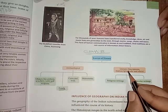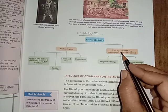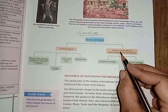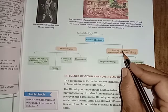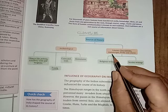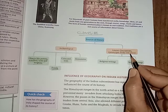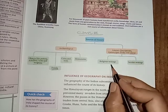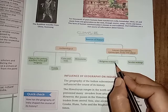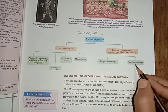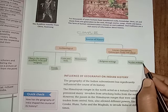Out of the literary sources, inscriptions — meaning stone inscriptions — manuscripts, books, and edicts are included. Religious writings and secular writings are also literary sources.